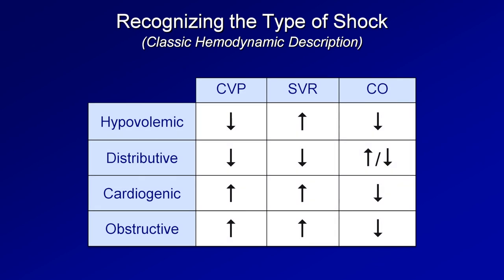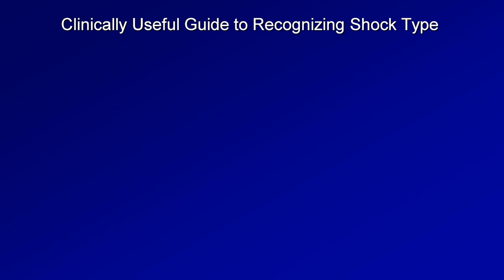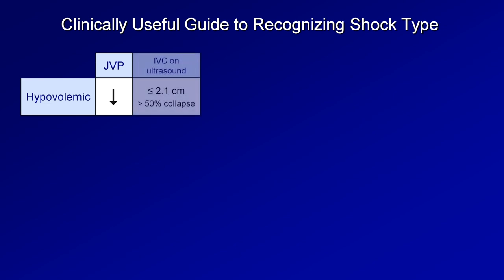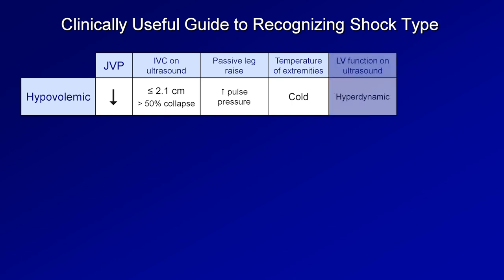Now let's go back to the chart categorizing shock type based upon CVP, SVR, and cardiac output — which is not all that helpful in practice. With everything just discussed, we can create an alternative, more clinically useful chart. In hypovolemic shock: JVP is low, IVC is non-dilated and collapsing on ultrasound, passive leg raise increases pulse pressure, extremities tend to be cold, and LV function on ultrasound tends to be hyperdynamic.